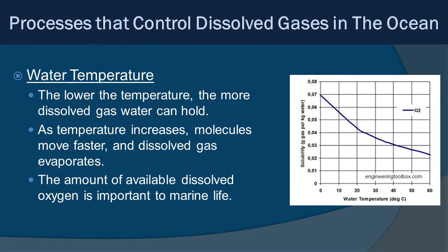Now let's look at the x-axis — water temperature. The lower the temperature, the more dissolved gas can be held in the water, because as temperature increases, molecules move faster and dissolved gases evaporate. Having dissolved oxygen available is very important for marine life, so this is a pretty critical relationship. As temperature increases from 0 to 60 degrees Celsius, dissolved oxygen goes down substantially. This can affect respiration, especially in coastal systems where you might have extreme temperature fluctuations in summer.